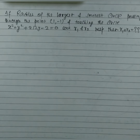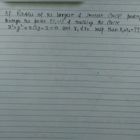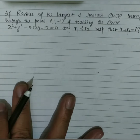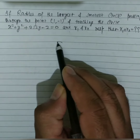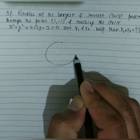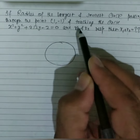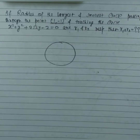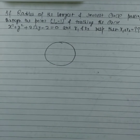In this video we are discussing problems based on circles. The next question is: if the radii of the largest and smallest circles passing through the point (1, −1) and touching a given circle are R₁ and R₂ respectively, find R₁ + R₂. First, let's check whether the point (1, −1) is inside or outside the given circle.